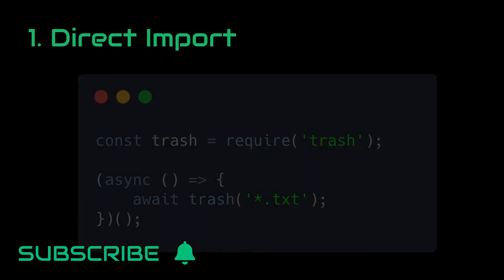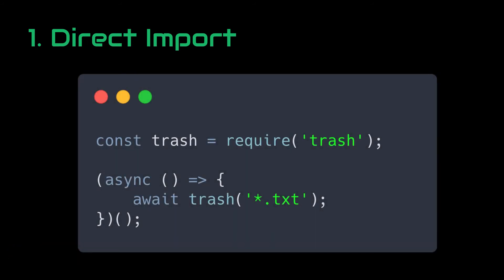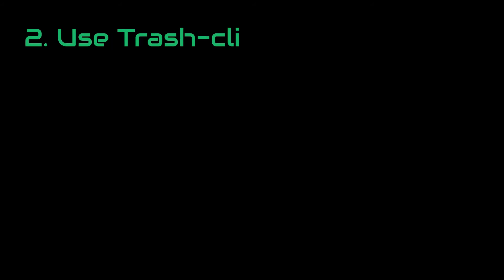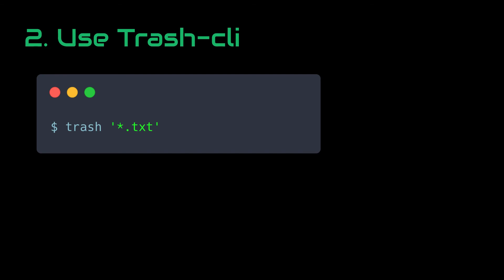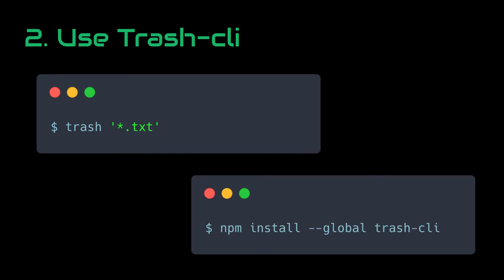First, we just import it into our project, call it, and give the file or glob pattern as a parameter. Then once we have executed that, it will move the deleted file into the recycling bin and return us a promise. And the second way is to install the trash CLI globally for manual deletion, which can be done by using this command.